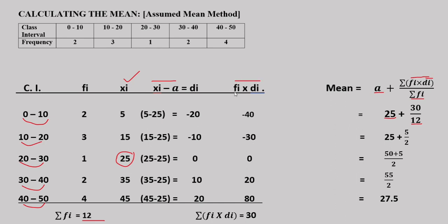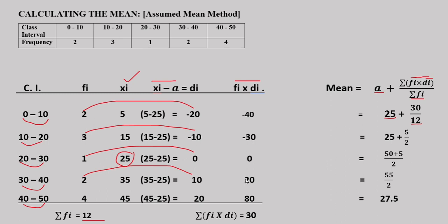Now multiply fi into di. fi·di: 2 into negative 20 is negative 40; 3 into negative 10 is negative 30; 1 into 0 is 0; 2 into 10 is 20; 4 into 20 is 80. Summation of fi·di is computed next.